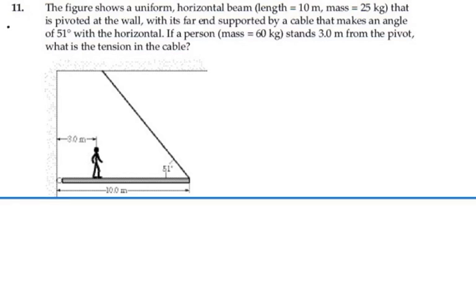Here's problem 12-11. The figure shows a uniform horizontal beam, length 10 meters, mass 25 kilograms, that is pivoted at the wall with its far end supported by a cable that makes an angle of 51 degrees with the horizontal. If a person of mass 60 kilograms stands 3 meters from the pivot, what is the tension in the cable?